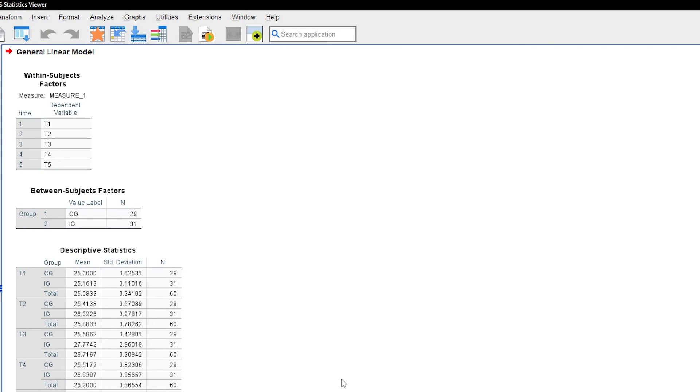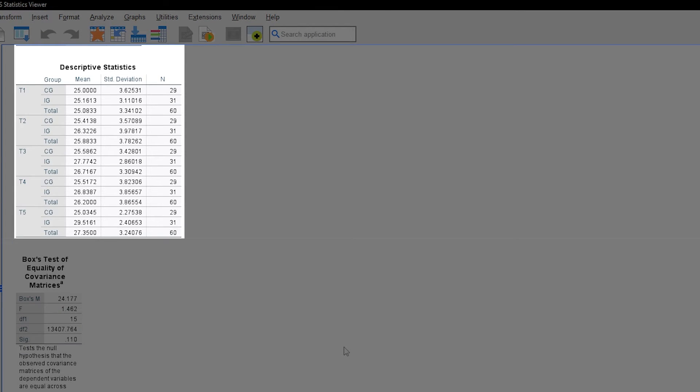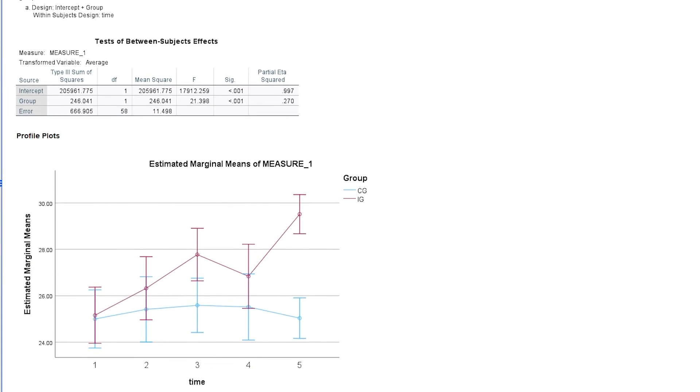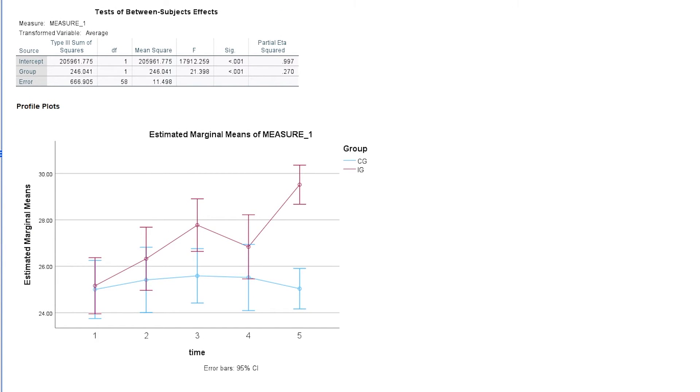Before I get into the model results, I take a quick look at the descriptive statistics and realize that the intervention group tends to have higher values over time. You can also scroll to the very bottom of the output and look at the chart I requested earlier for a better understanding.